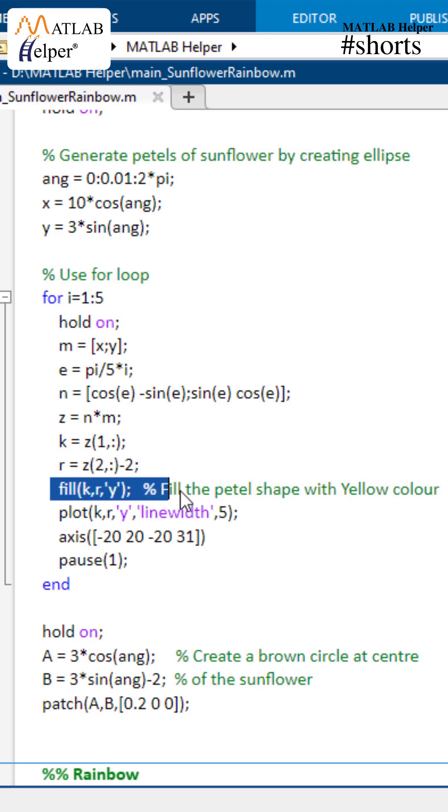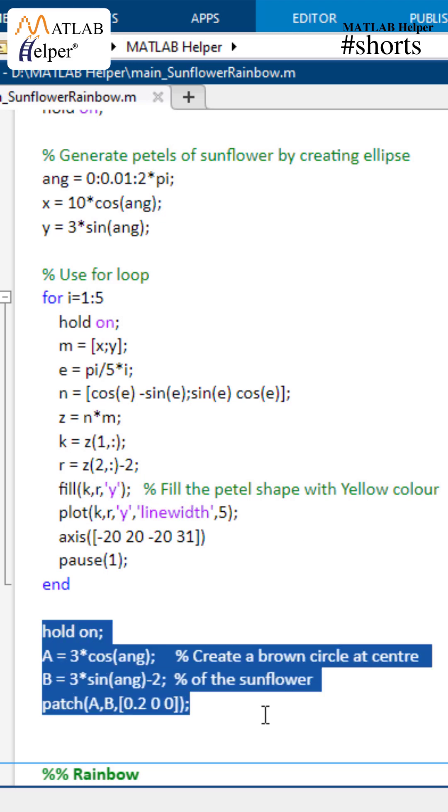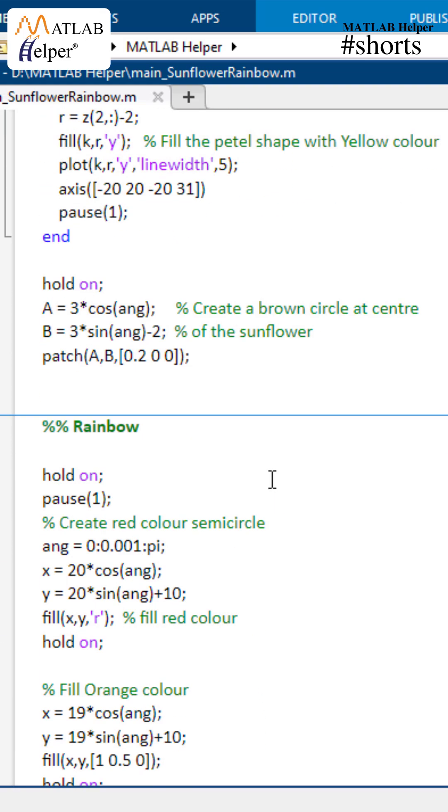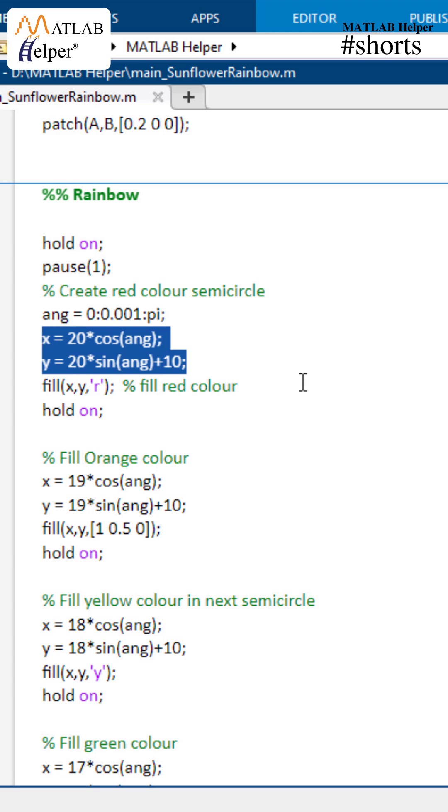This last section of code creates a brown circle at the center of the sunflower. Now moving on to the rainbow, these two mathematical equations create a semicircle. Using this fill command, the semicircle gets filled with red color.